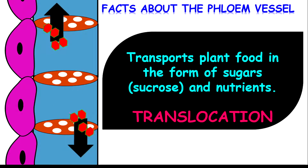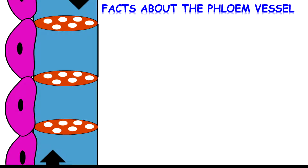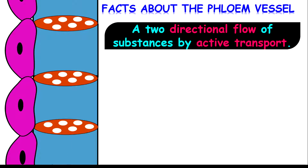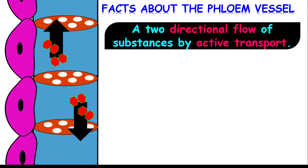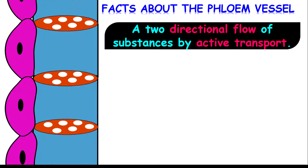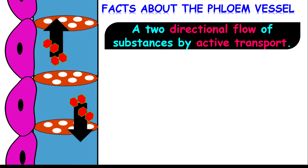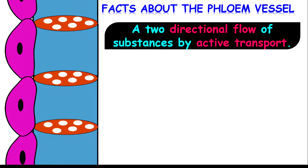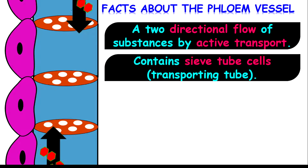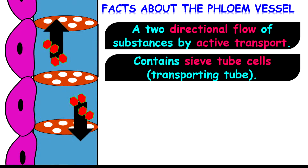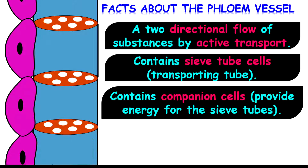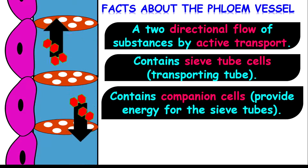The movement of plant food and sugars throughout the plant is called translocation. Another important fact about the phloem is that there is a two-directional flow of substances by active transport — substances are transported both up and down, compared to the xylem which flows only upwards. Active transport requires energy, unlike passive transport which does not. Companion cells are very important in providing energy for the sieve tube to carry out active transport.